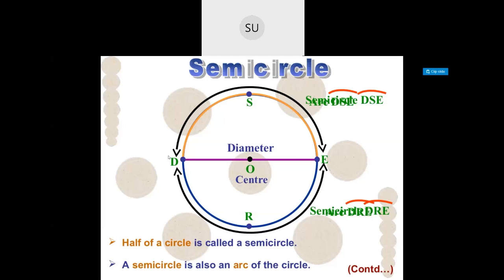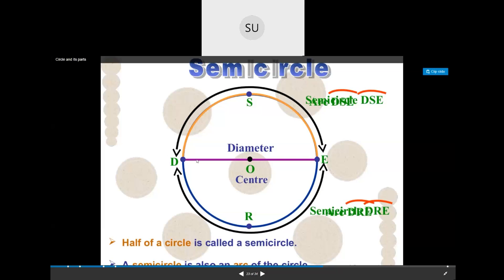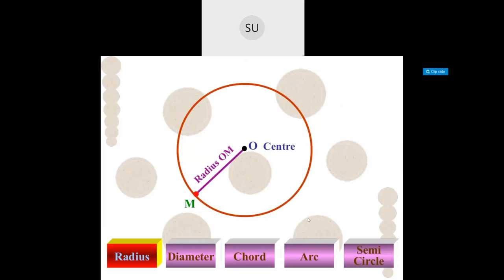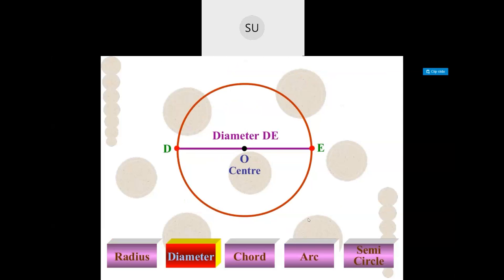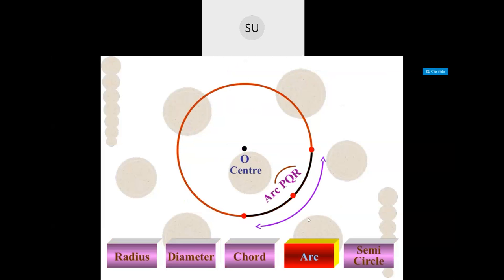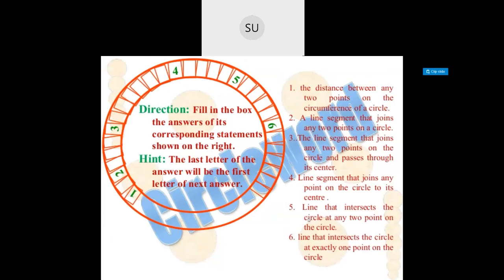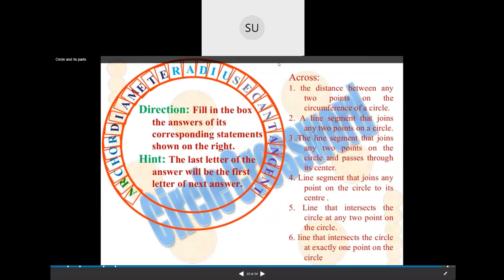A semicircle is half of a circle. A circle is also an arc of the circle. If you see here, this is one half of a circle and this is another half — so these are two semicircles. To recap the terms: the center is the fixed point inside the circle; the radius joins the center to any point on the circle; the diameter joins two points on the circle passing through the center; an arc is between two points on the circumference; and a semicircle is half of a circle.